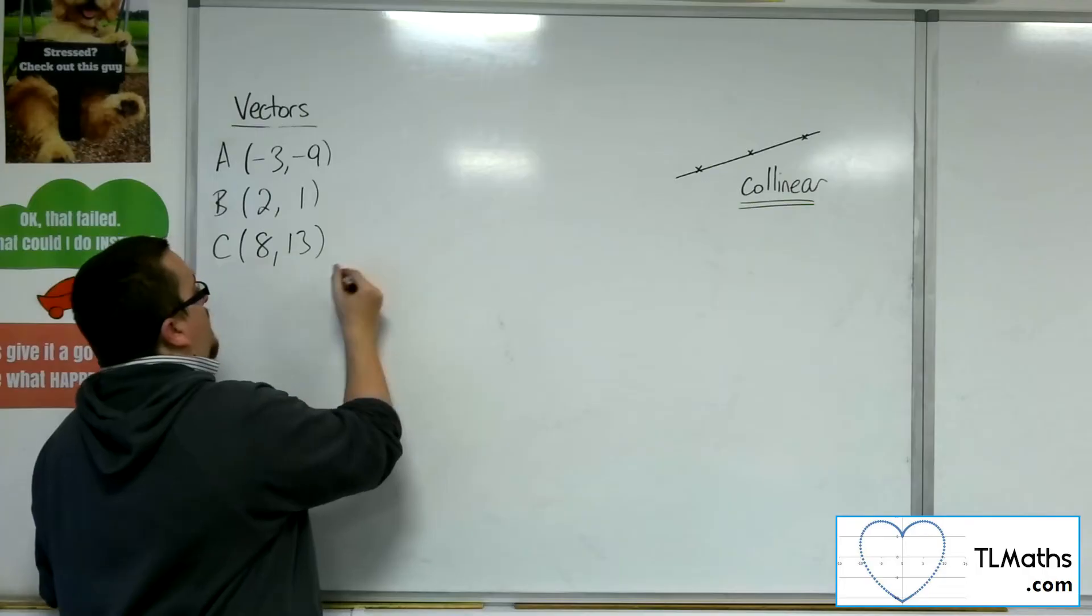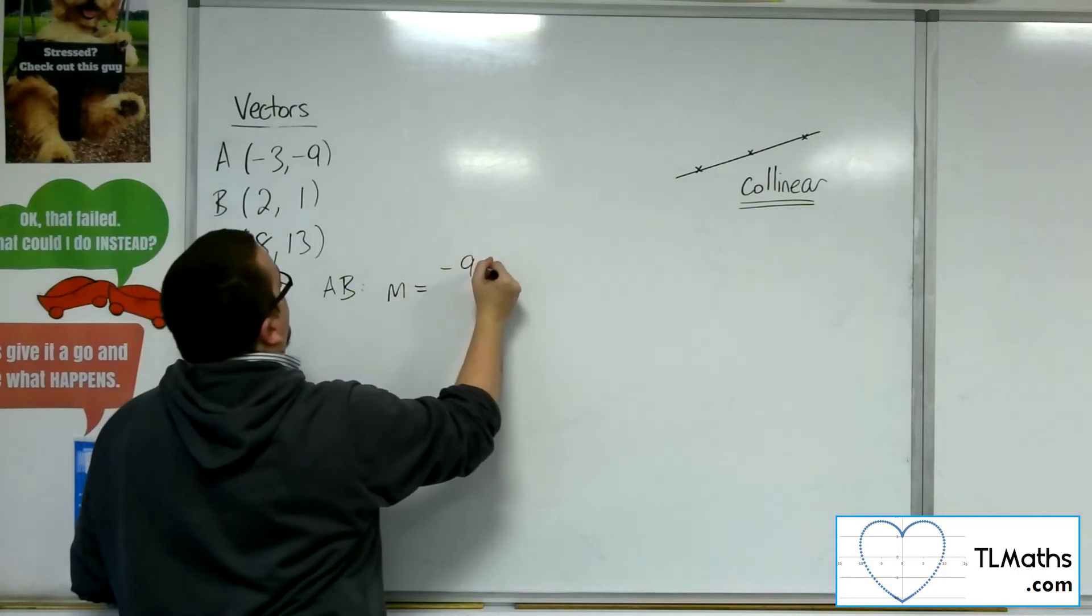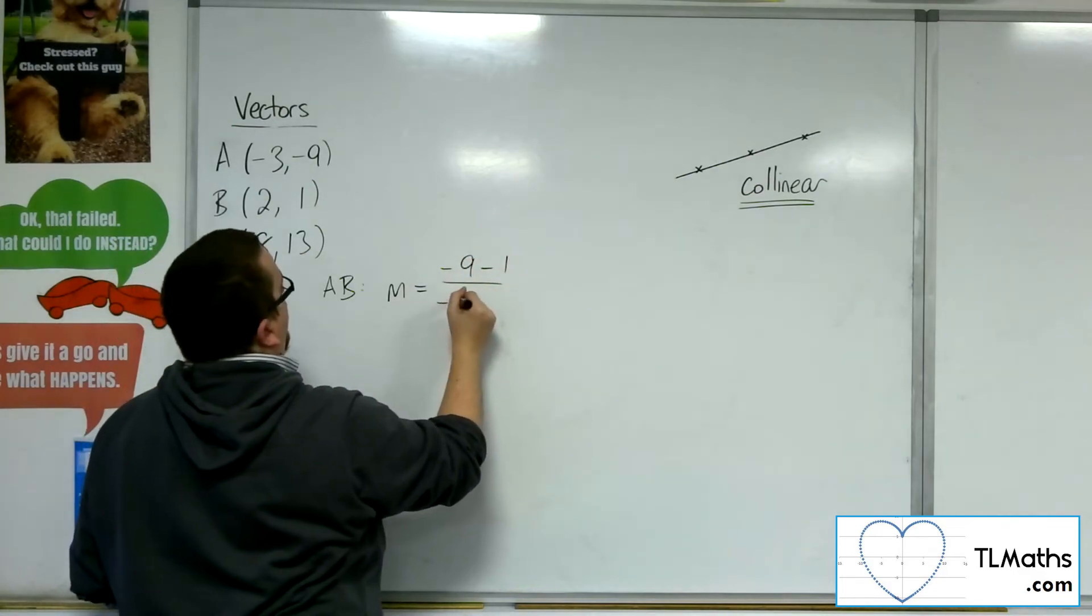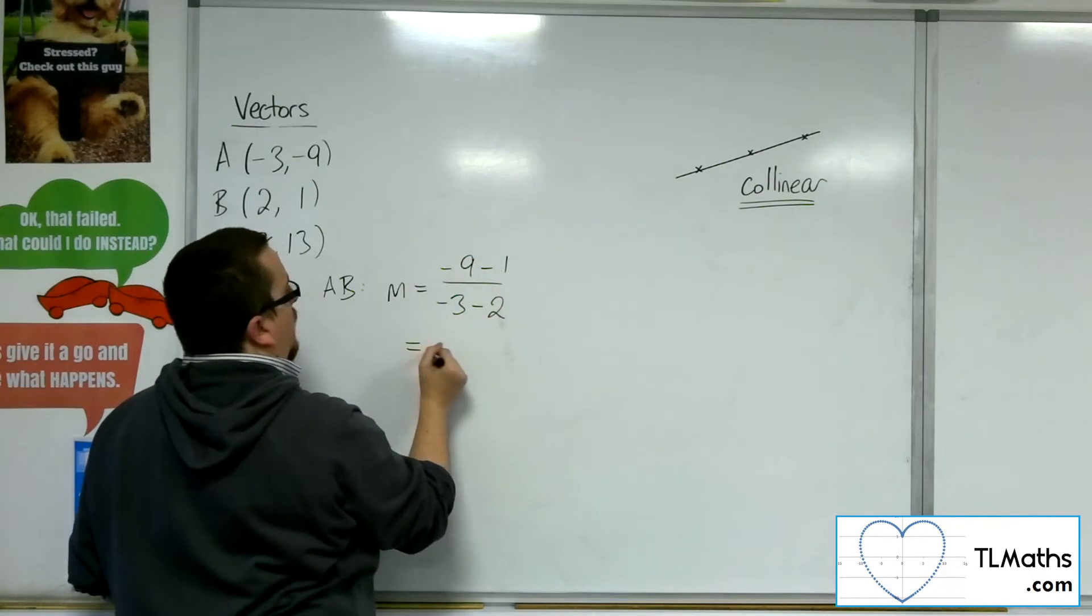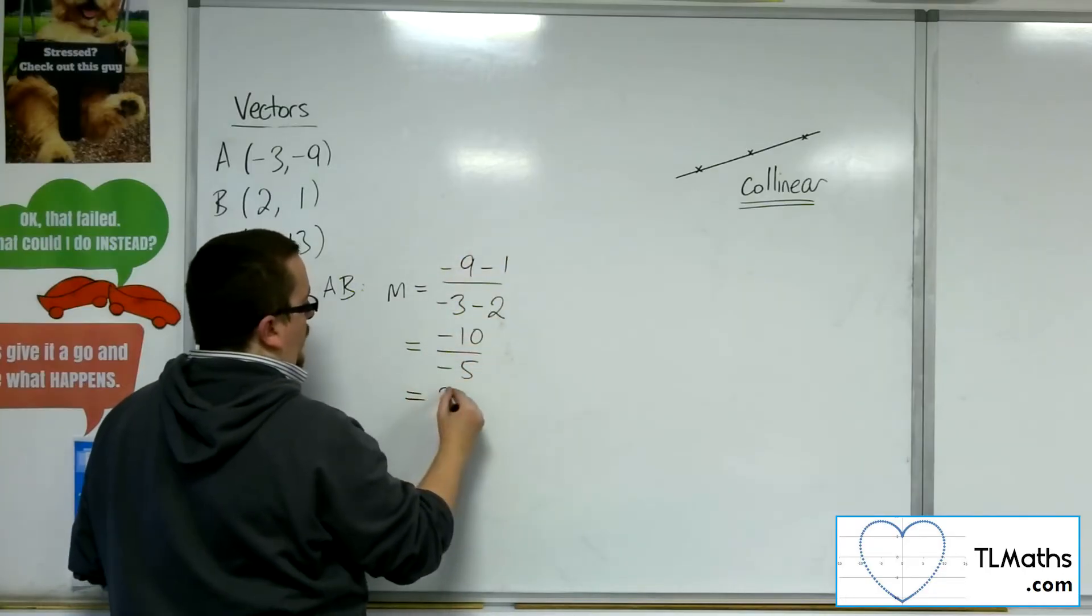I'm going to find the gradient between A and B. So the difference in the y-coordinates divided by the difference in the x-coordinates. We've got negative 9 take away 1, so negative 10, divided by negative 5, so that's 2.